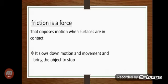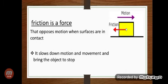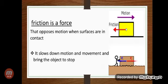After these actions, here we come to know that there is a force which opposes the motion, and this force is known as friction. So we can say that friction is a force that opposes motion when surfaces are in contact. It slows down motion and movement and brings the object to a stop.